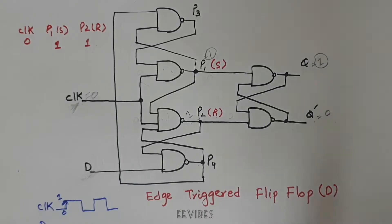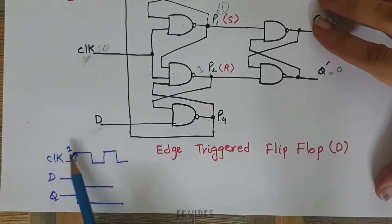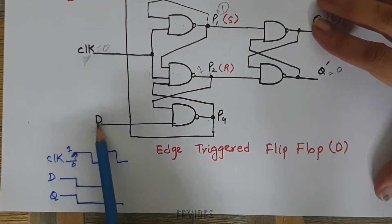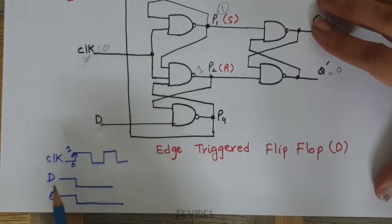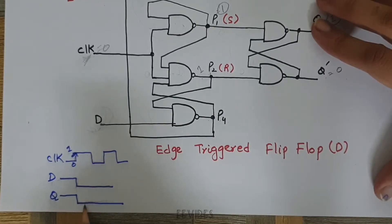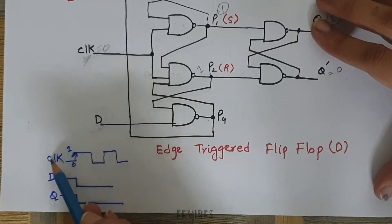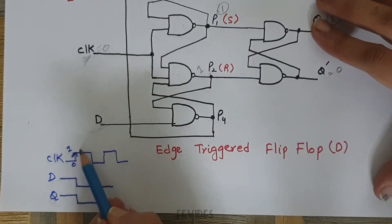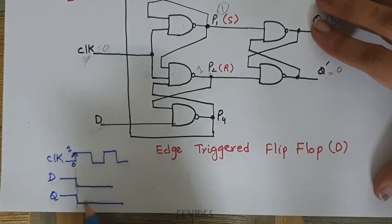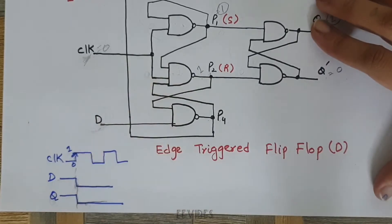This is called the edge-trigger flip-flop because the flip-flop uses clock pulses. Since this is the D type, the data D is supposed to be transferred at the output side Q. Whatever the value of D is should be forwarded at the output side. Since it is the positive edge-trigger flip-flop, whenever the clock signal switches from 0 to 1, the value of D should be forwarded at the output. So if D is equal to 0, the output should also be equal to 0.